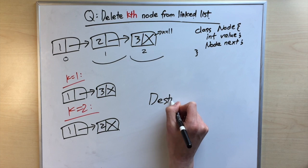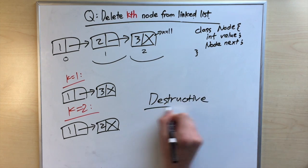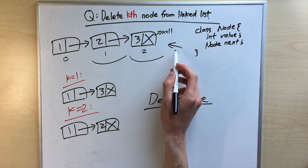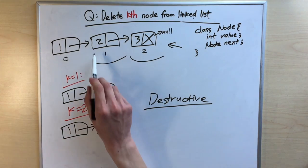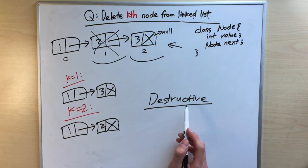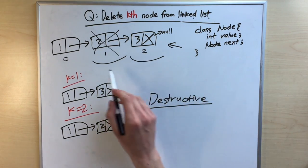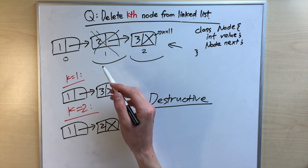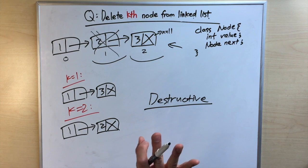We'll take a destructive approach — like a one-way street. Once you delete a node, there's no going back. After you remove it, that node is gone for good.